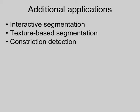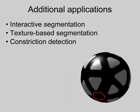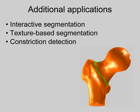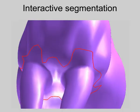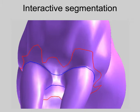Our algorithm's versatility is demonstrated by realizing it in three additional applications: interactive segmentation, texture segmentation on manifolds, and local constriction detection. In interactive mesh segmentation, the user draws an initial boundary curve on the mesh surface, which the system attempts to improve. This also illustrates the inherent capability of our method to handle topological changes, such as splitting and merging, in the curve during the process.